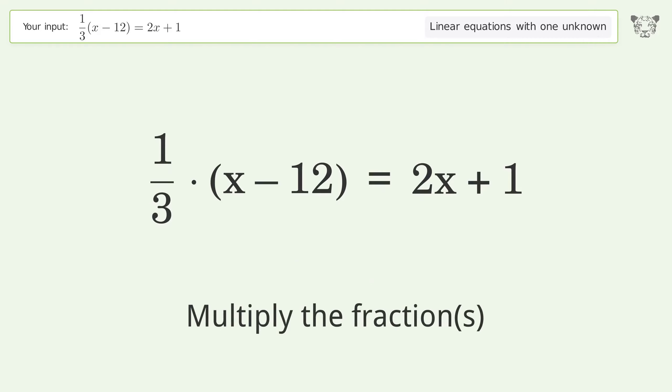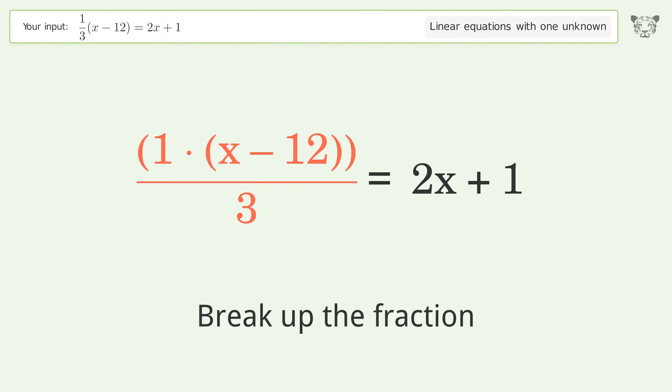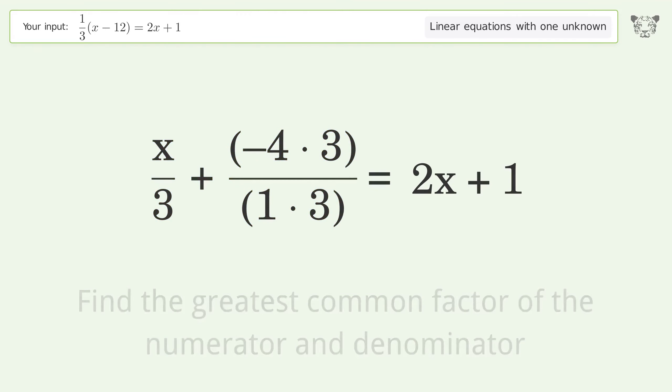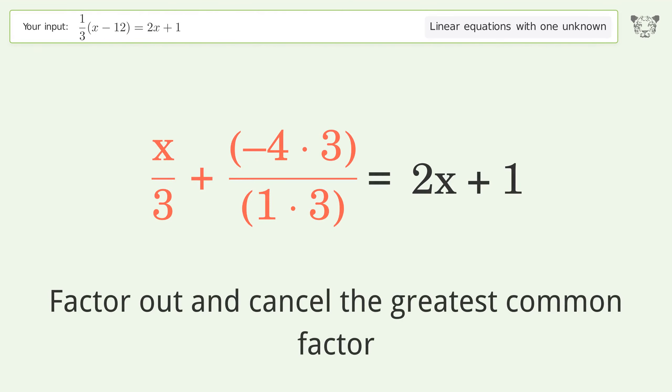Multiply the fractions. Break up the fraction. Find the greatest common factor of the numerator and denominator. Factor out and cancel the greatest common factor.